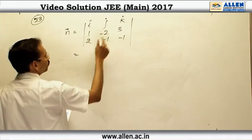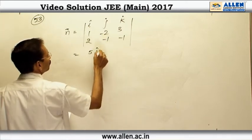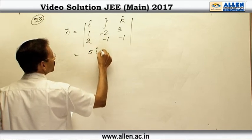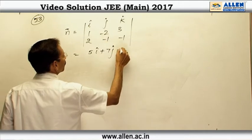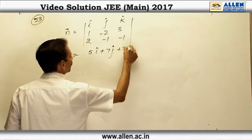It is 2 plus 3, 5i cap, then this is 7j cap, and then it is 3k cap.